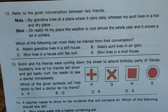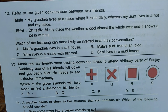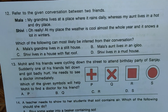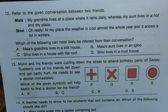Question twelve: Mala says her grandmother lives where it rains daily, her aunt lives in a hot and dry place, and her friend says the weather at her place is cool almost all year with lots of snow in winter. Which can most likely be inferred? Option A — Mala's grandma lives in a stilt house: correct, because it rains heavily and daily. Option B — Mala's aunt lives in an igloo: no, she lives in a hot place. Option C — friend lives in a flat-roof house: no, snow accumulates on flat roofs. Option D — mud house: no, not suitable for heavy snowfall. Only option A is correct.